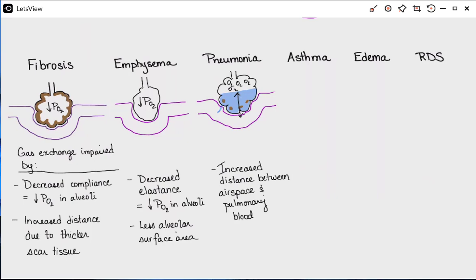So asthma is one that we have seen before. We know that asthma's big issue here is bronchoconstriction. And so bronchoconstriction is going to lead to a lower pO2 and therefore less of a gradient.